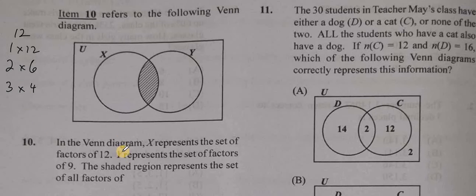We're told that set y represents the set of factors of 9. So look at the factors of 9. We have 1 times 9 give us 9, and 3 times 3 give us 9. So we have 1, 3, and 9 being factors of 9.